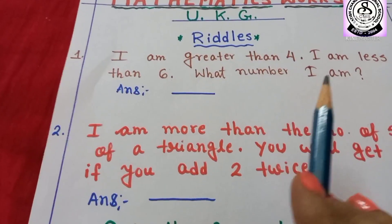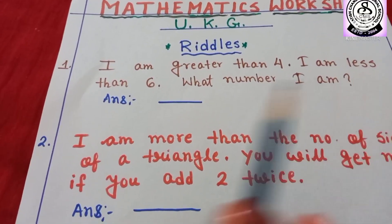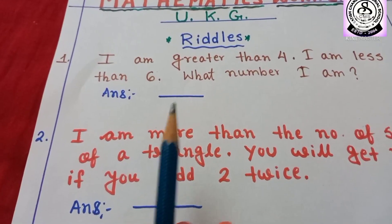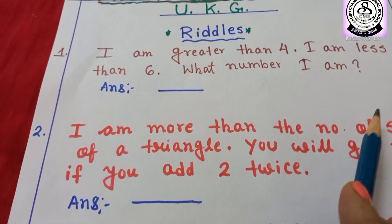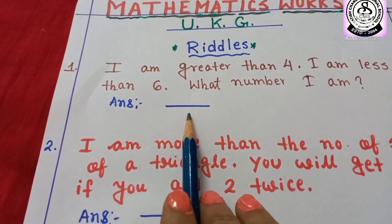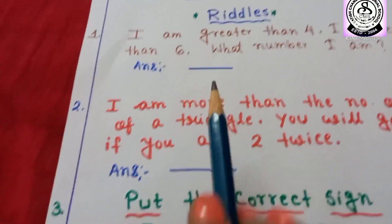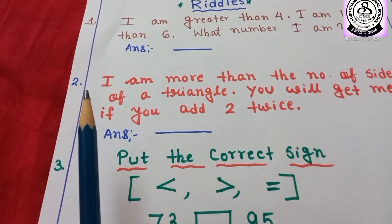I am greater than 4. I am less than 6. So what number am I? 5. So here you have to write 5. Number 2.